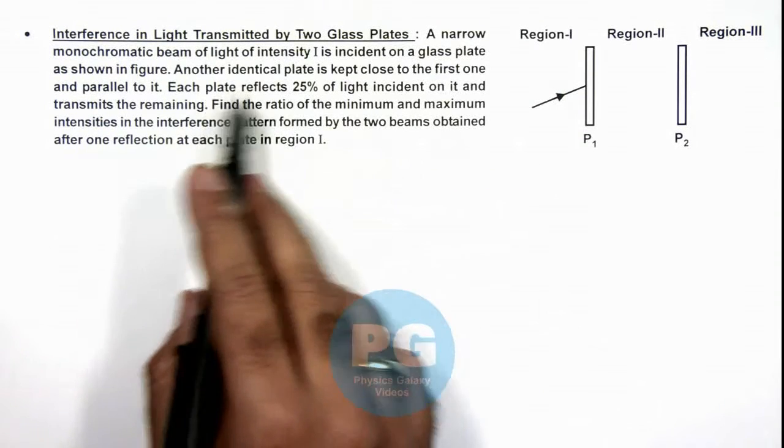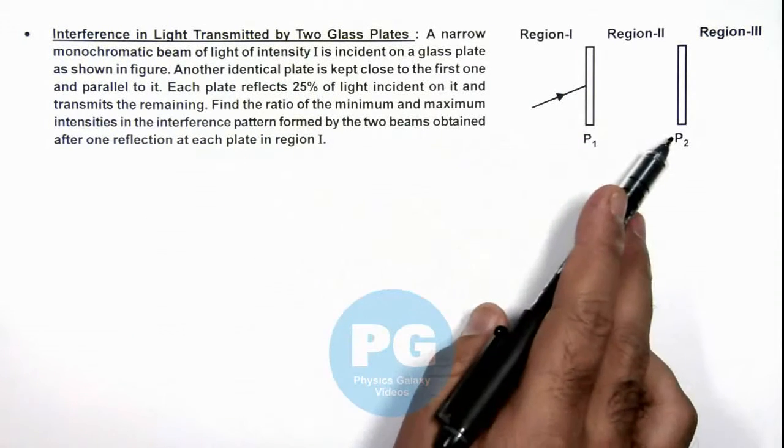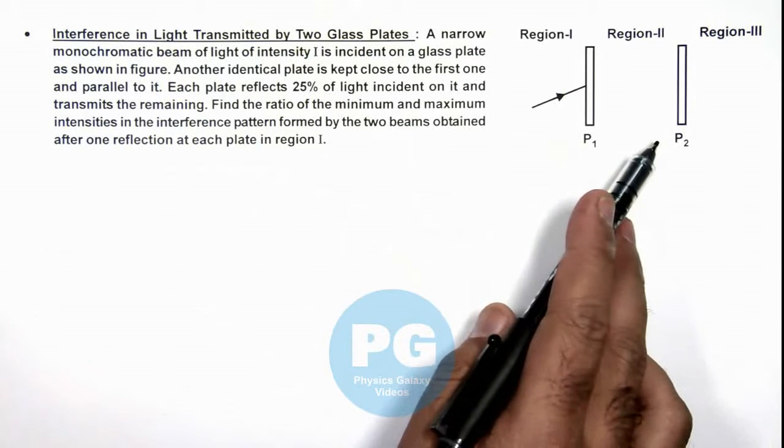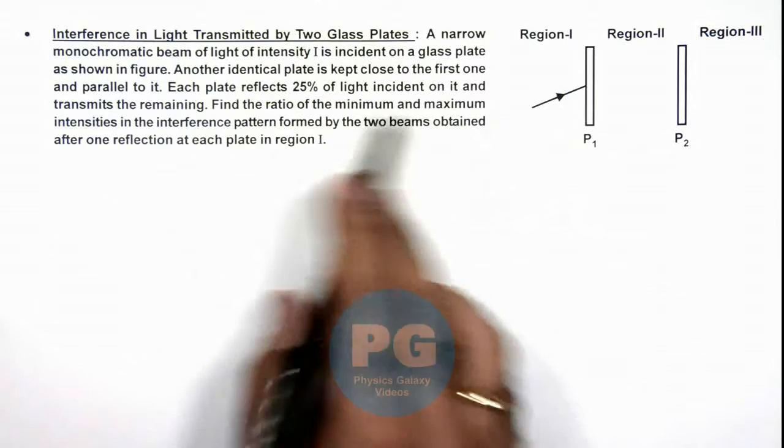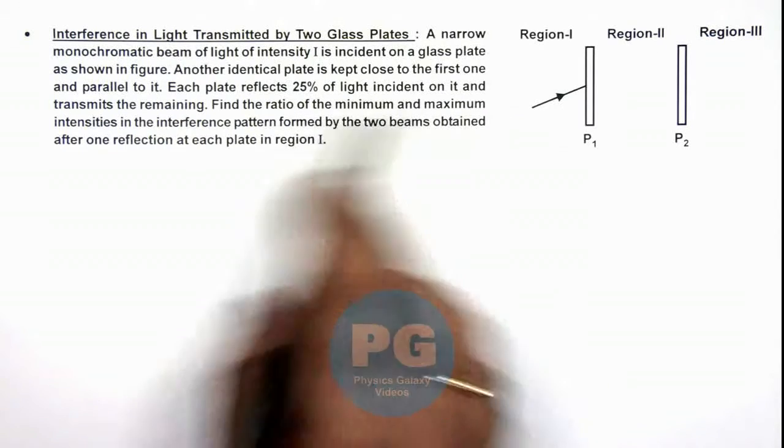Another identical plate is kept close to the first one and parallel to it. We are given that each plate reflects 25 percent of light incident on it and transmits the remaining.